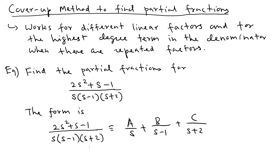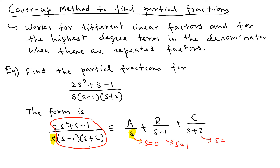Now we use the cover-up method. To find A, cover up the s term in the denominator, then plug in the value of s that makes that term zero — so plug in s = 0 — into the rest of the left-side expression. To find B, ignore (s - 1) and plug in s = 1. To find C, ignore (s + 2) and plug in s = -2.